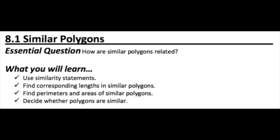This is lesson 8.1, similar polygons. The central question is how are similar polygons related. What you're expected to learn is to use similarity statements, find corresponding lengths in similar polygons, find perimeters and areas of similar polygons, and decide whether polygons are similar.